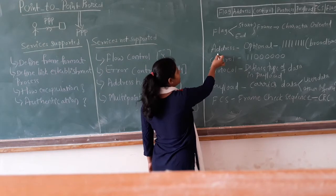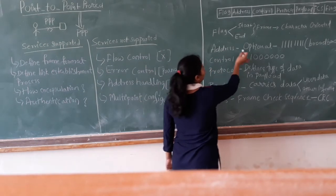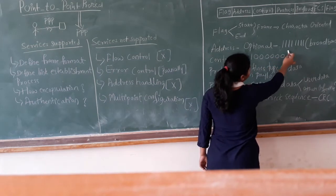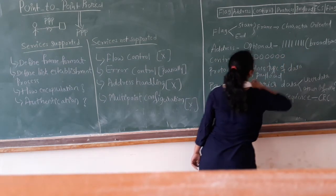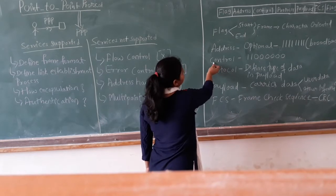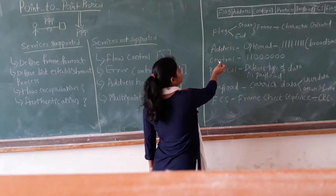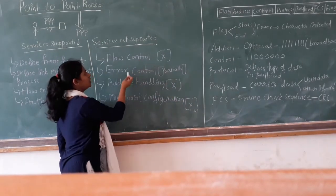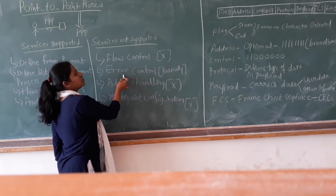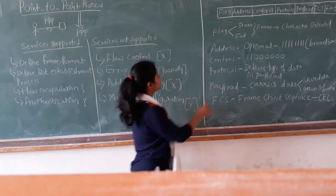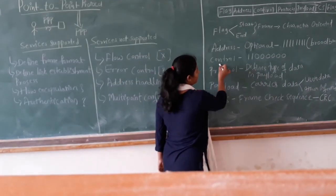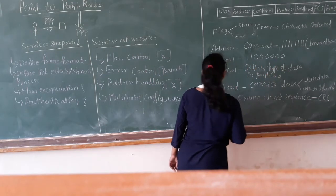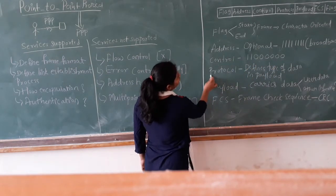The second field is the address field. The address field is an optional one and is assigned with a constant value of all 1s — it is the address of broadcast. The third field is the control field, which is actually not necessary. Since flow control is not supported and only partial error control is supported, the control field is added in the format and assigned with a constant value of two 1s and the rest 0s.